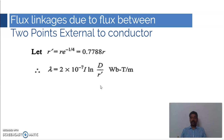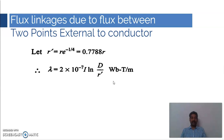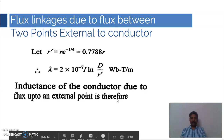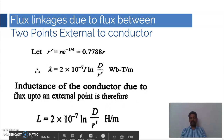We replace R × e^(−1/4) with a simple constant R'. Here R is the actual radius of the conductor, and R' is called the virtual radius, which is slightly less than the actual radius, given by R' = 0.7788 × R. Substituting R' gives the total flux linkage as λ = 2 × 10⁻⁷ × I × ln(D/R') Weber-turns per meter. The total inductance is L = 2 × 10⁻⁷ × ln(D/R') Henry per meter, accounting for both internal and external flux.